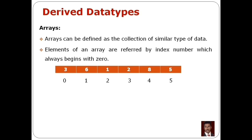We can store 6 elements in the array. But in an array, there is only one type of data. If we declare an integer array, then it is an integer array. If we declare a floating array, we will use a similar type of data.